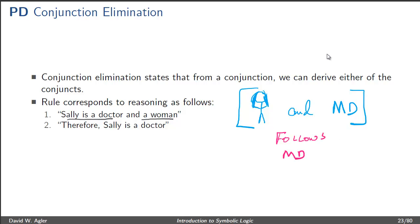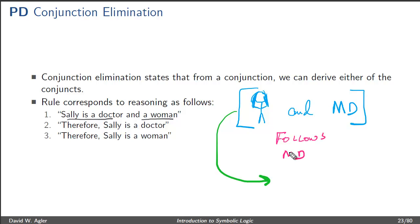In addition, we can say that from this sentence — Sally is a doctor and a woman — it also follows that she is a woman. So from this complex sentence, not only does it follow that she's a doctor, but we can also say that it follows that she is a woman. The idea is that from the complex sentence, we can reason to either one of the conjuncts.